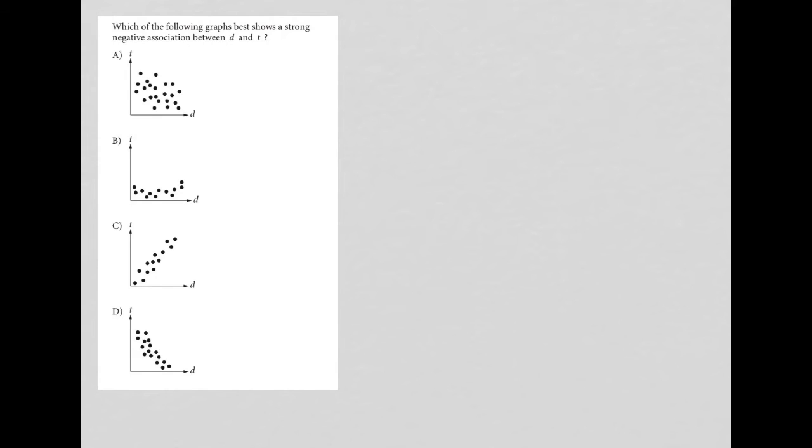So this question says, which of the following graphs best shows a strong negative association between D and T? So I call this a diagram question. The question itself doesn't have a diagram involved, but the answer choices are all graphs.